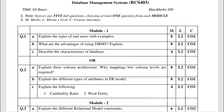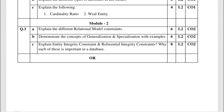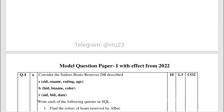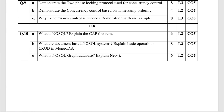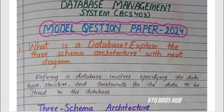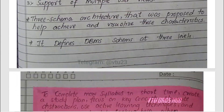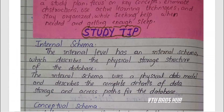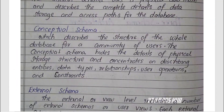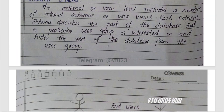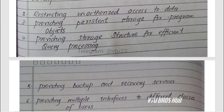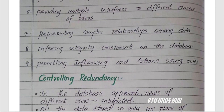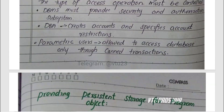We've got five modules — from database basics, design, relational models, SQL, normalization, to transactions, concurrency, and even NoSQL systems like MongoDB and Neo4j. It's a complete package, both theory and practical, and yes, a scoring subject too.